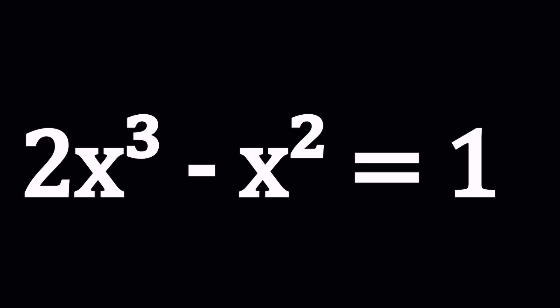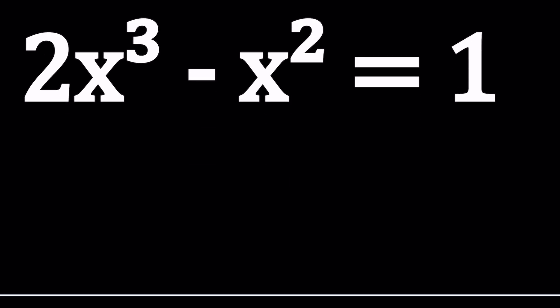Hello everyone, in this video we're going to be solving a nice cubic equation. We have 2x cubed minus x squared equals 1 and we're going to be solving for x values. And I'll be presenting three methods even though not all methods will be complete. Let's start with the first method. My first method will be to treat this as a general cubic.